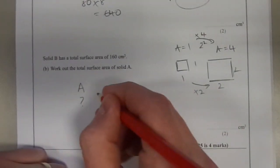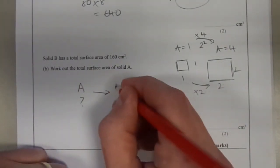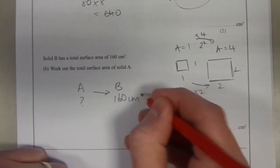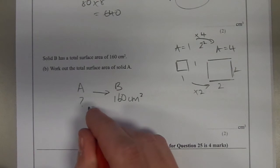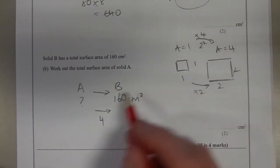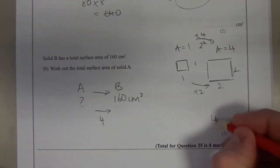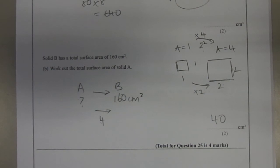A has an unknown surface area. B has a surface area of 160 centimetres squared. The surface area of B must be 4 times bigger. It's 2 squared times bigger than this one. What value do we increase by a factor of 4 to get 160? The answer is 40 centimetres squared.